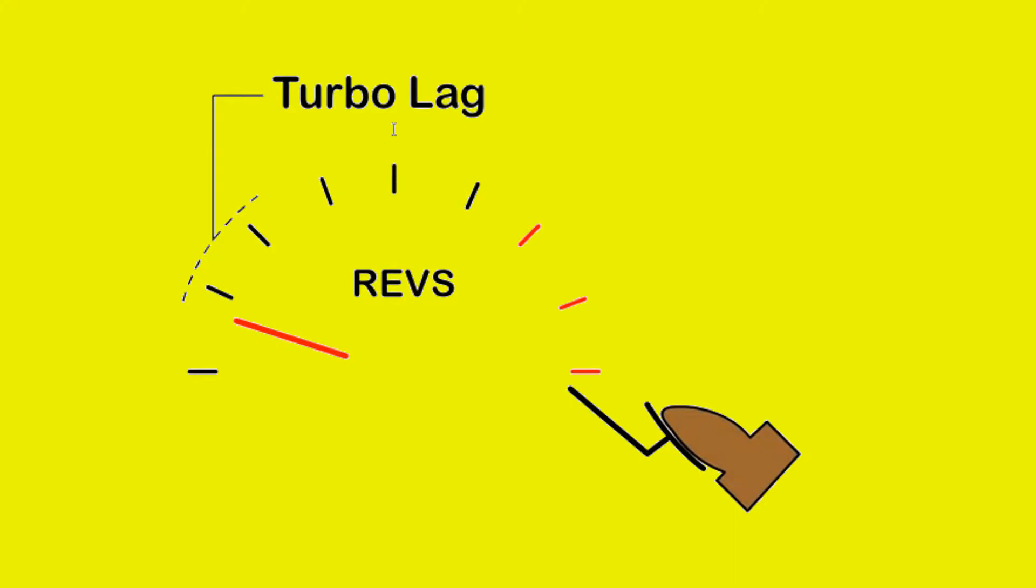This time delay or turbo lag is noticed during acceleration. At mid-range we get a surge in power as the turbo develops boost pressure. The variable geometry turbo helps to reduce turbo lag.